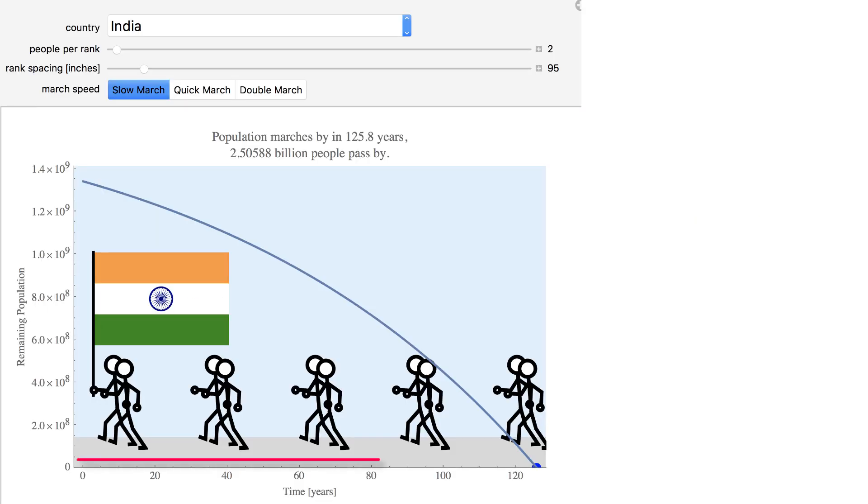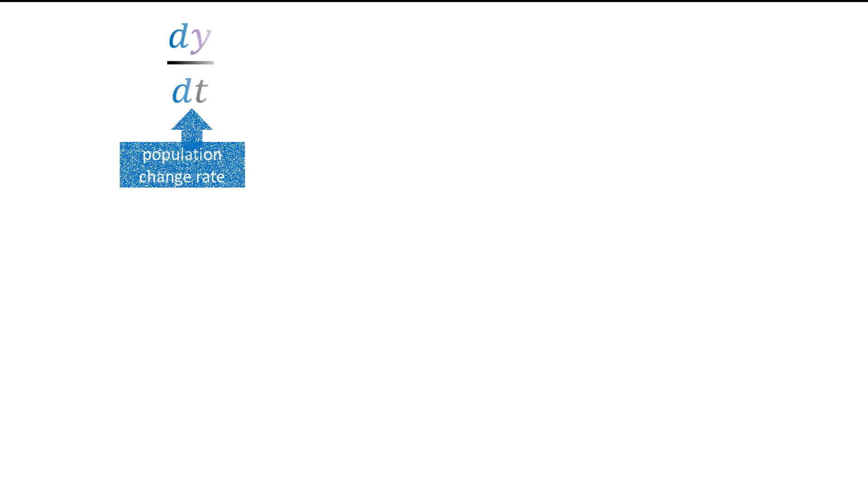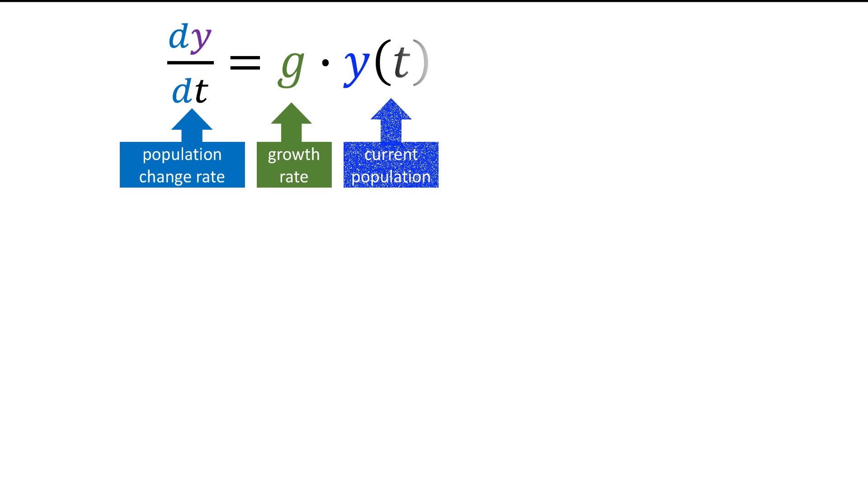The number of people marching who have yet to pass a given spot at time t in years is y of t. Y at 0 is a country's initial population. We assume that people passing in the parade no longer contribute to population growth. The instantaneous change is given by the growth rate g multiplied by the initial population, less r.